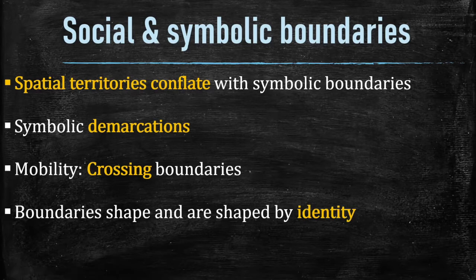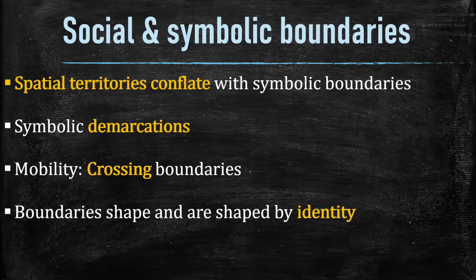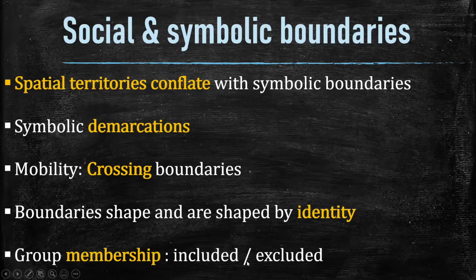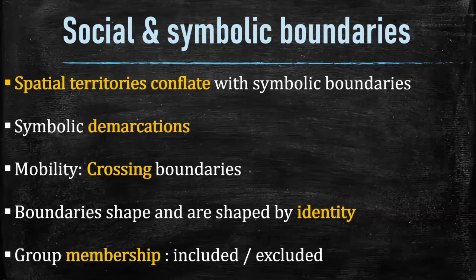Another issue in the literature is that when you cross boundaries, you activate your identity — your own identity in the first space — and then there is a different identity in the destination space. When you want to move to a new space, you have to struggle to get membership and access. You can be included, and sometimes you are excluded. We will see in a bit how all these mechanisms work in the corpus.